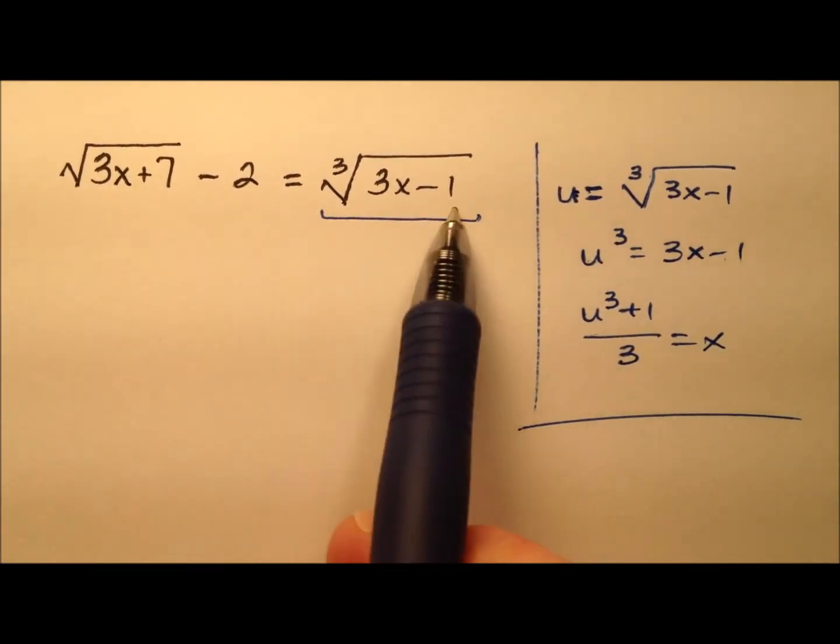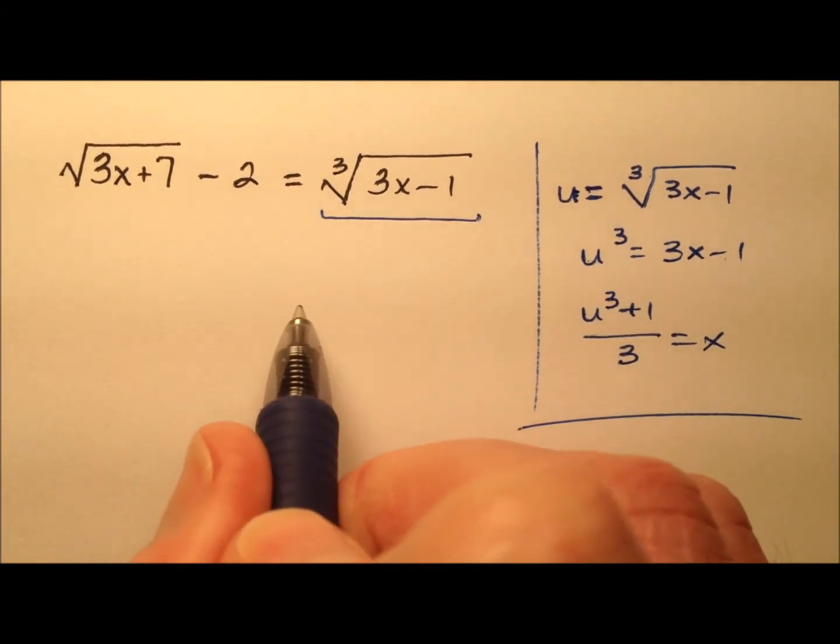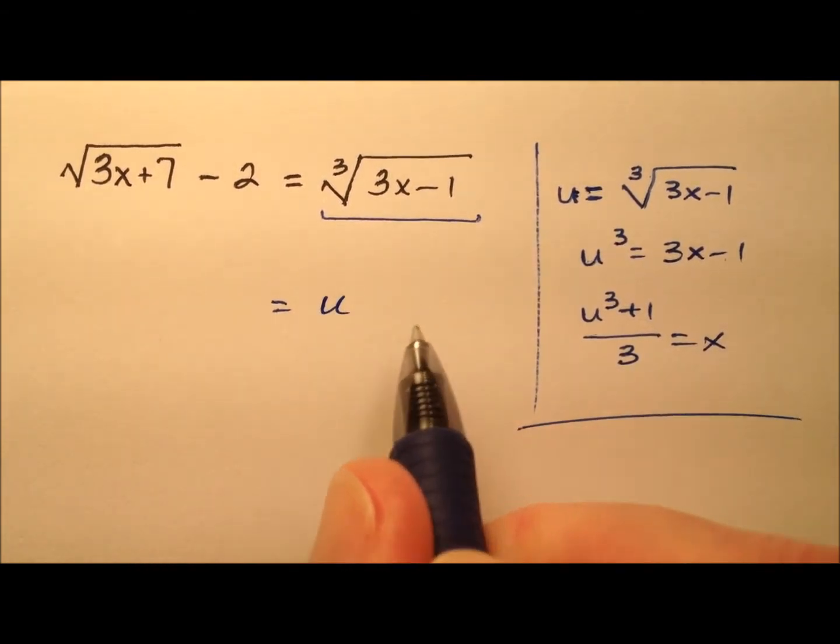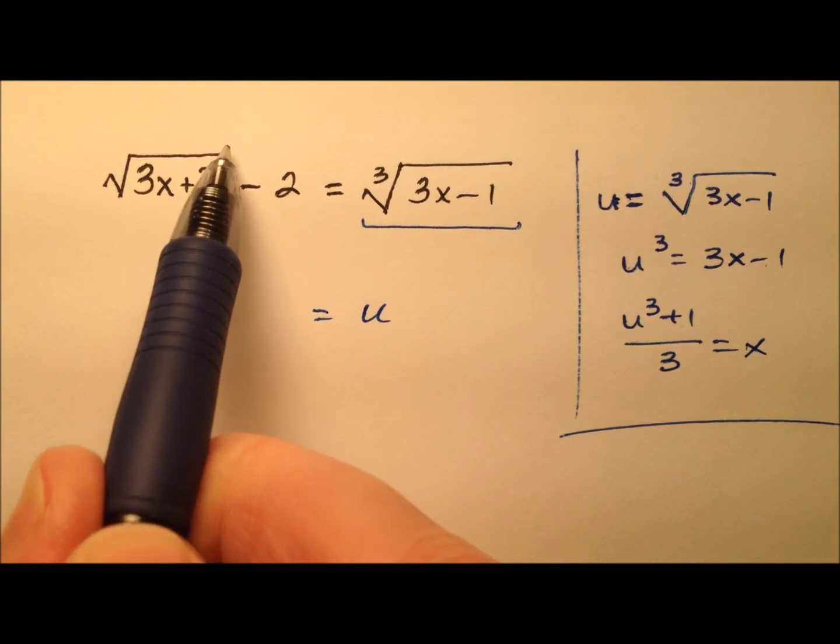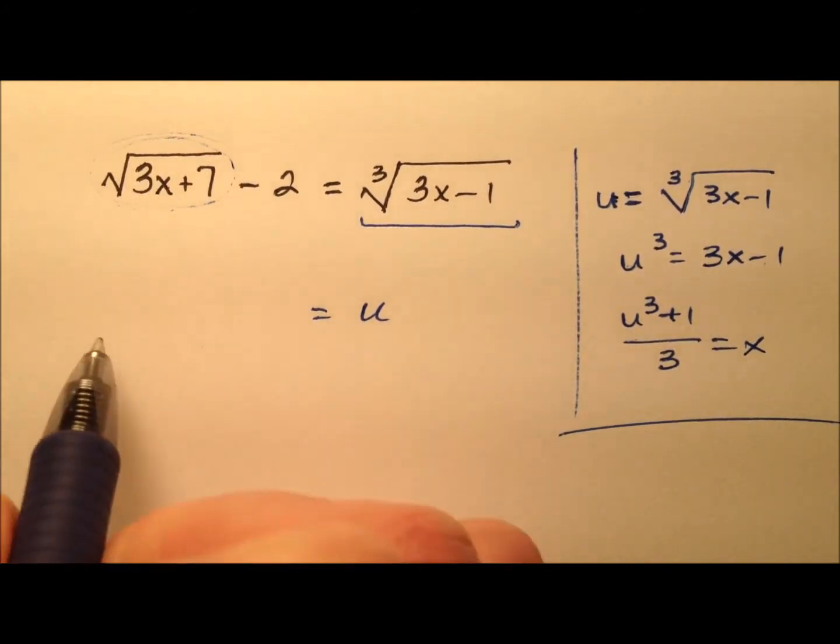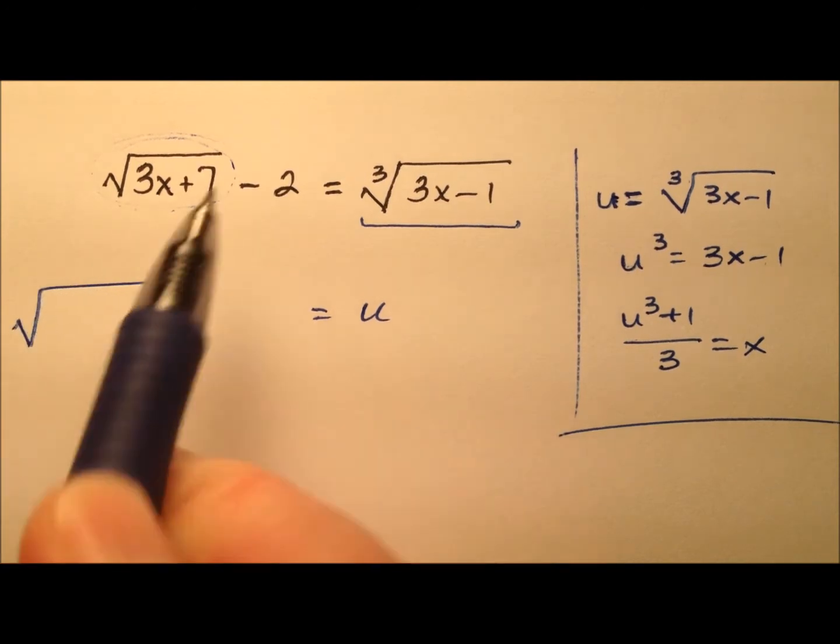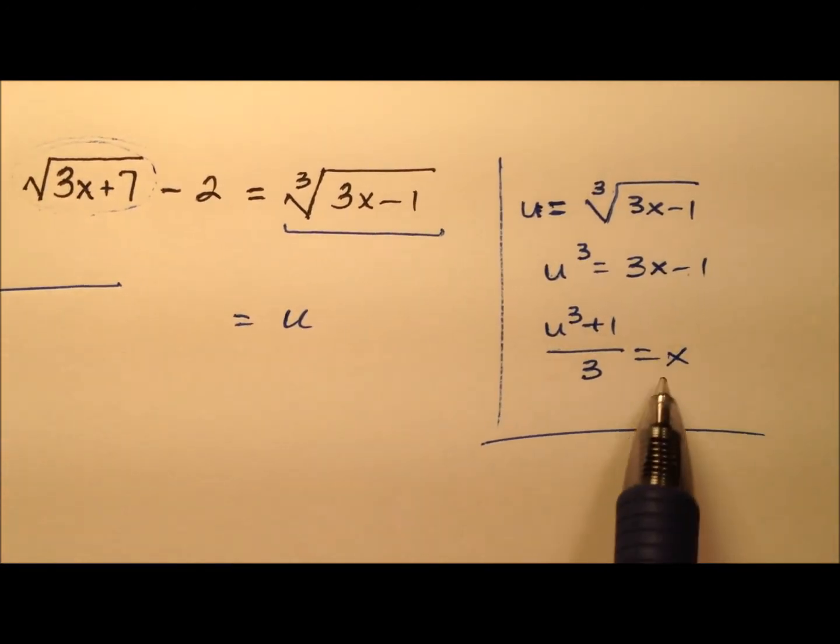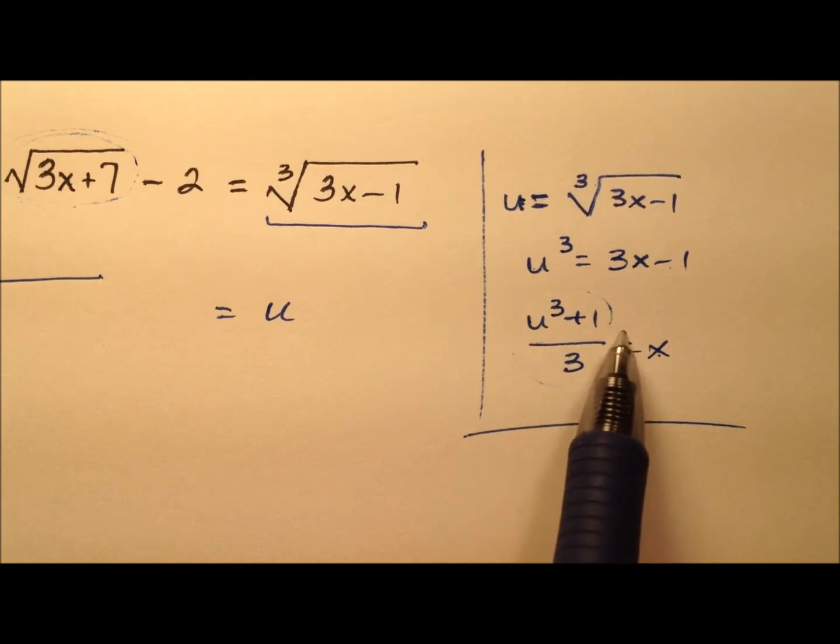So let's go ahead and now look at this. The right side of my equation becomes just u, and then how can we rewrite this square root expression so it's now in terms of u? Well, it's going to be the square root of 3x, so 3 times this.